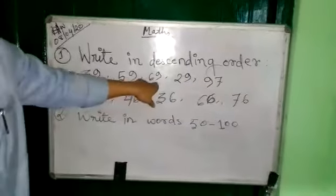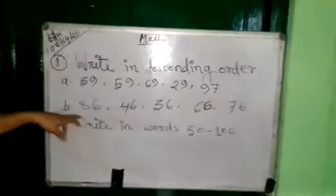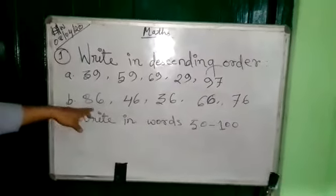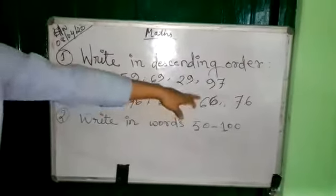39, 59, 69, 29, 97. And here 86, 46, 36, 66, 7.